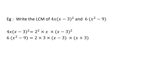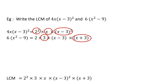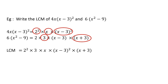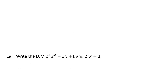Now we find the highest powers. The highest power of 2 is 2 squared; we take 3 as there is no other power of 3; x has no other powers; (x minus 3) has (x minus 3) to the power 2 so we select that; and (x plus 3) has no other power so we consider that as well. The LCM is the product of all these terms: 12x times (x minus 3) whole thing squared times (x plus 3).